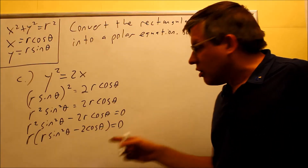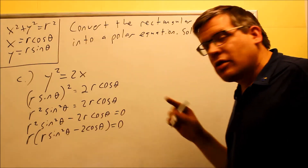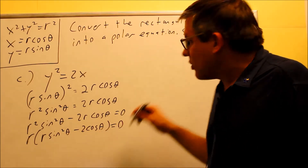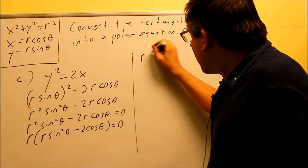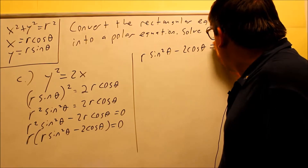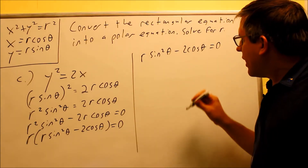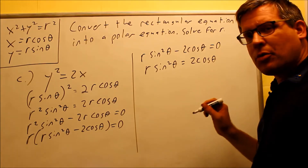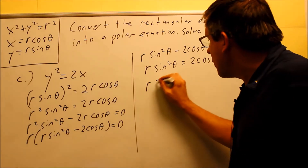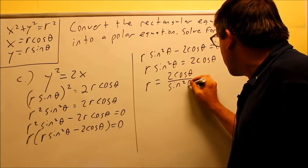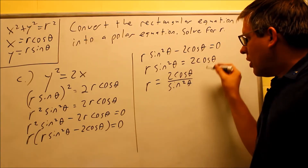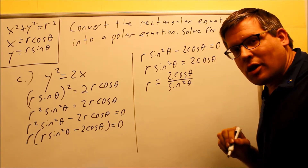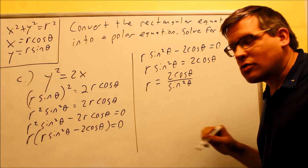As before, setting r equal to zero gives just a point, so we ignore that answer. We only look at the factor in parentheses: r sine squared theta minus 2 cosine theta equals zero. Adding 2 cosine theta to both sides and then dividing both sides by sine squared gives r equals 2 cosine theta over sine squared theta.